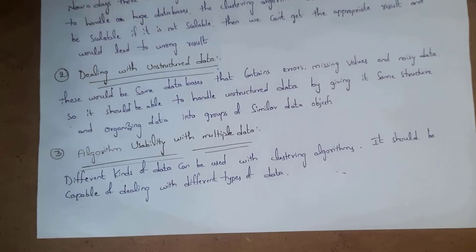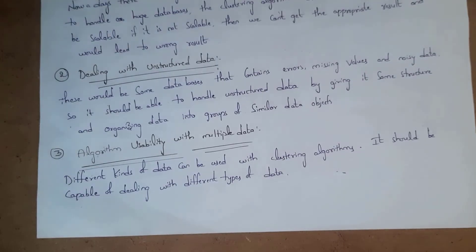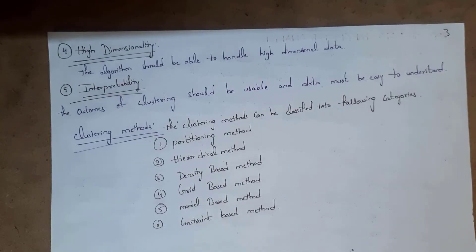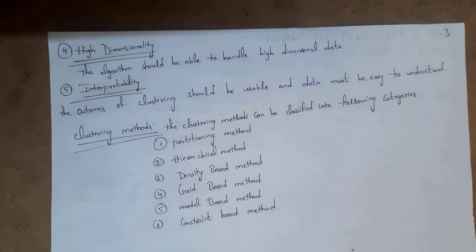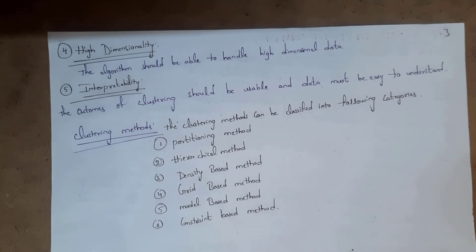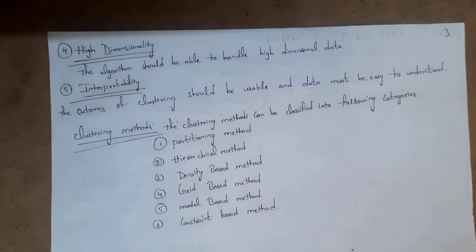The third property is algorithm usability with multiple data types, meaning the clustering algorithm should handle multiple types of data like binary data, scalar data, and so on. The fourth property is high dimensionality, meaning the clustering algorithm should be able to handle high dimensional data.